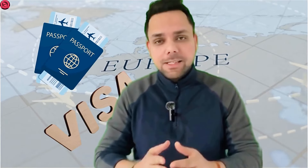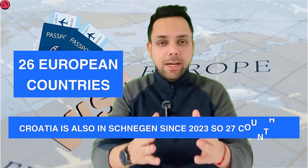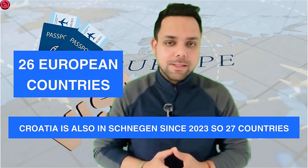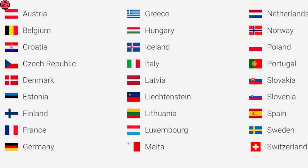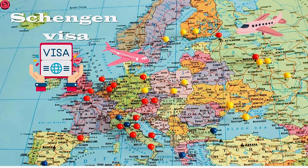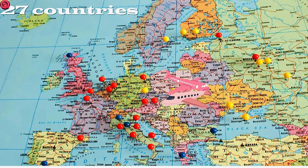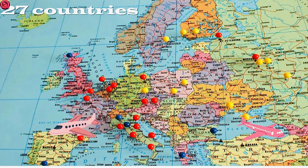First of all, let's understand what a Schengen visa is. A Schengen visa is a type of short-term visa that allows you to travel freely within the Schengen area, which comprises 26 European countries. If you are planning to travel to any of these countries, you will need one Schengen visa, and you can travel to all 26 Schengen countries without any hassle.